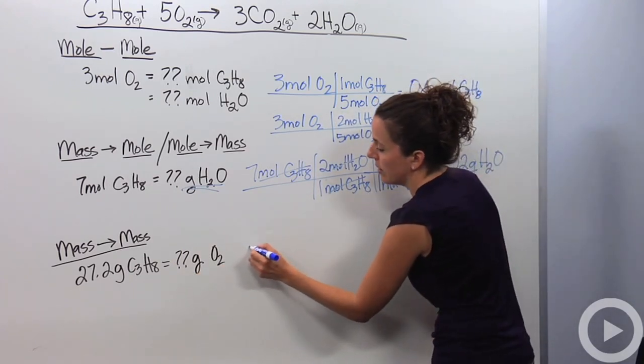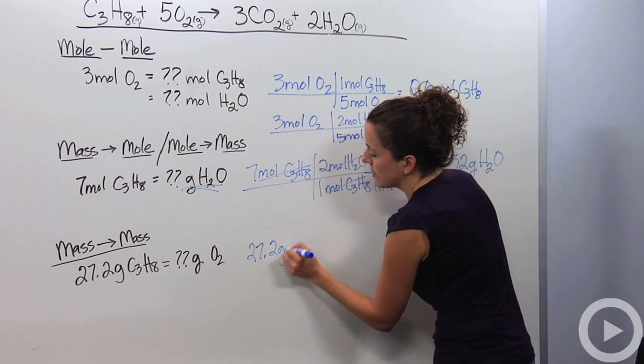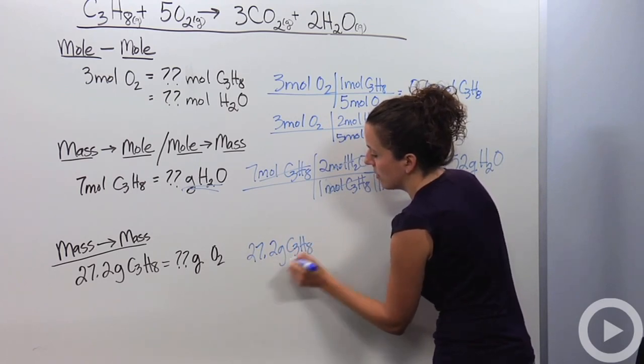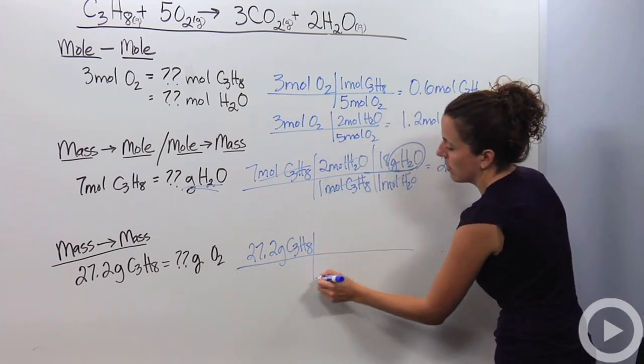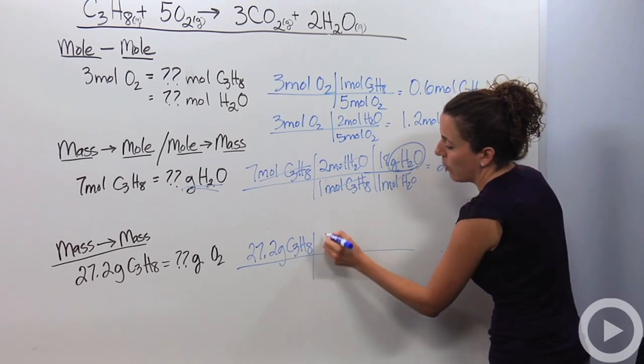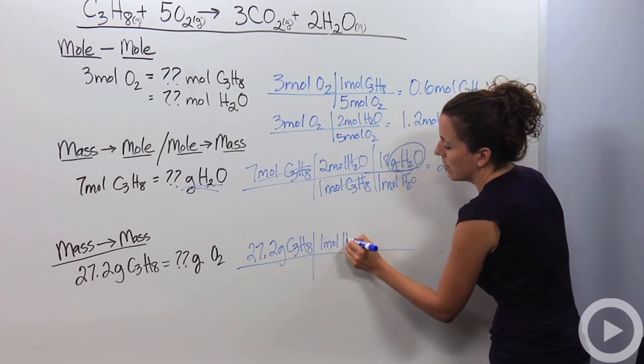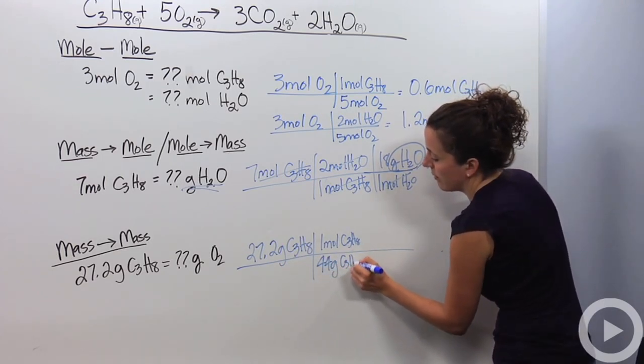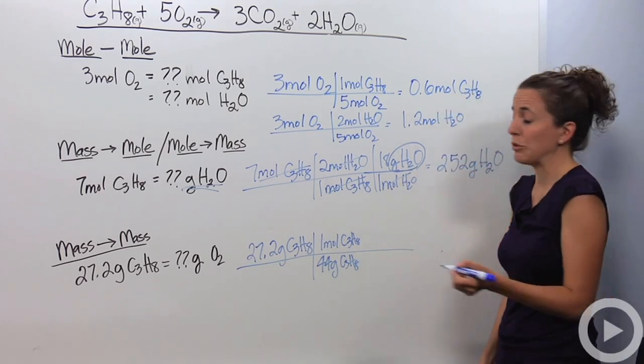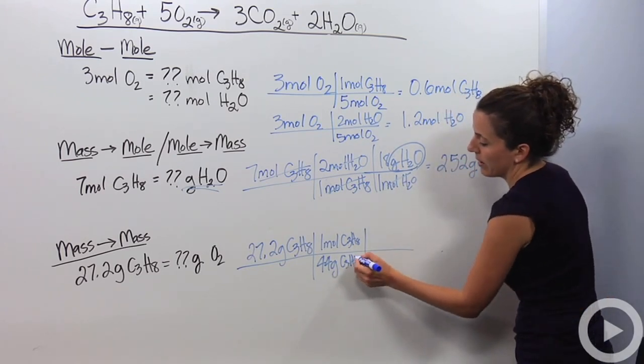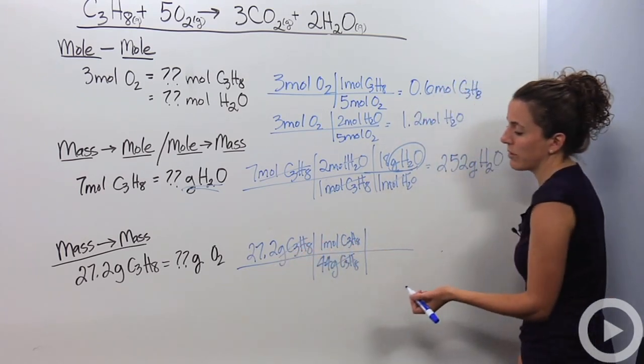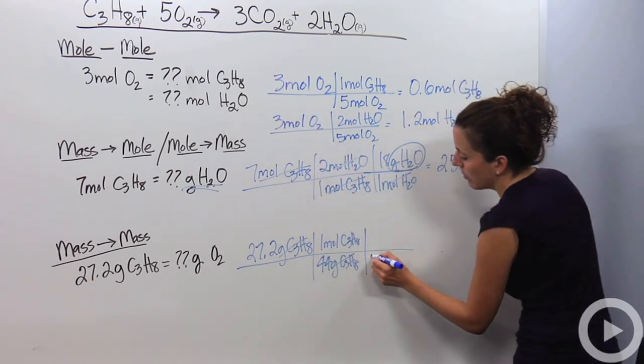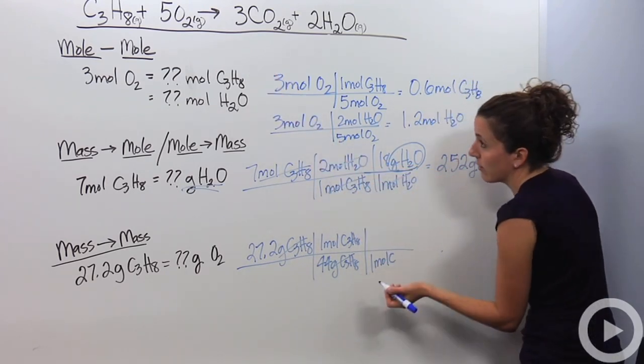We start out with 27.2 grams of C3H8. In one mole of C3H8, there's 44 grams of C3H8 and that I got from the periodic table. These cross out. So now I'm in moles of C3H8. I know that one mole of C3H8, looking at my reaction, I require five moles of oxygen gas.